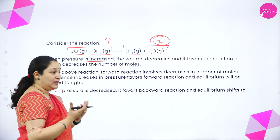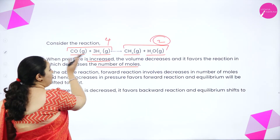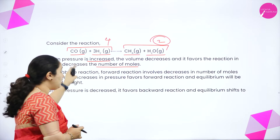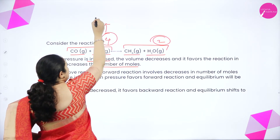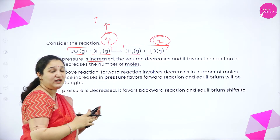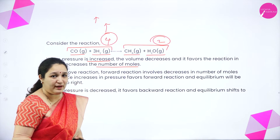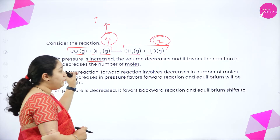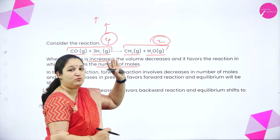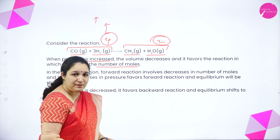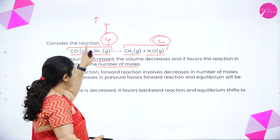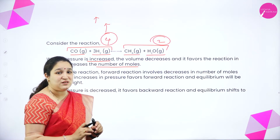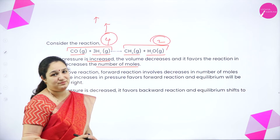If I decrease the pressure, the backward direction will be favored because on the reactant side the number of moles are more, so pressure will increase and nullify the decrease in pressure applied. To repeat: in this example, increase in pressure favors forward direction so that the number of moles are reduced; decrease in pressure favors backward reaction so that the number of moles of gas increases. This is how the system nullifies the effect of pressure.